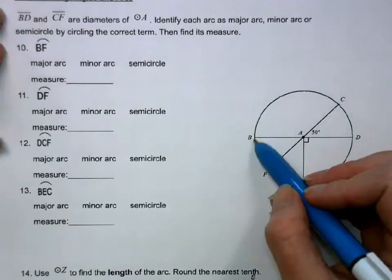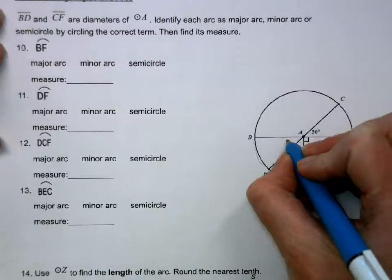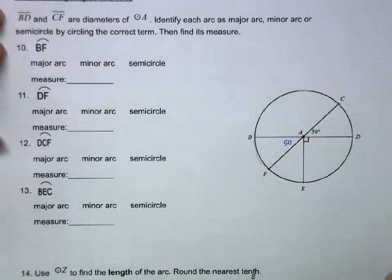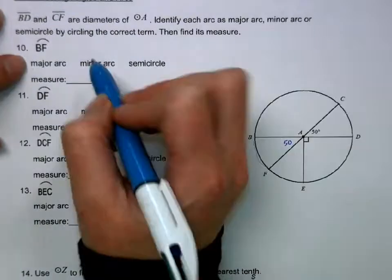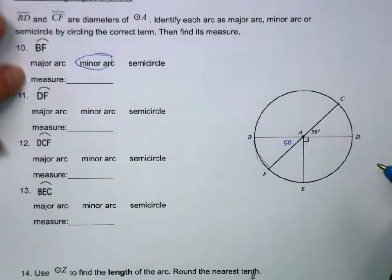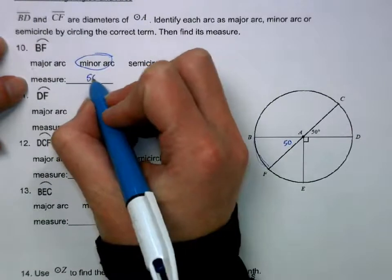Okay, so if I want BF, if this is 50, this is 50 because of vertical angles. So it is a minor arc because it's less than 180. And the measure is 50.